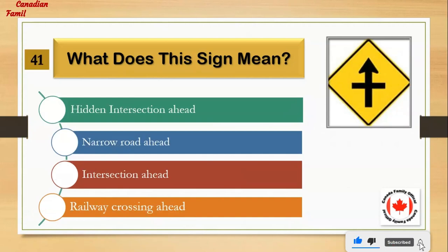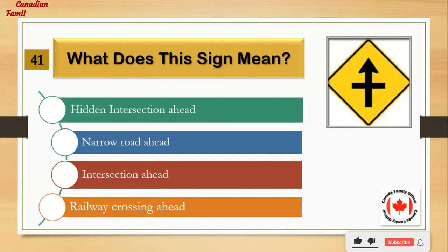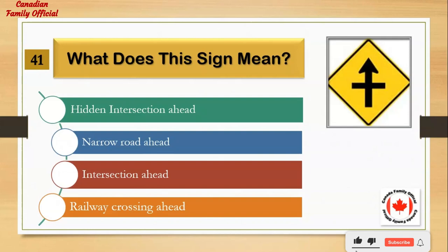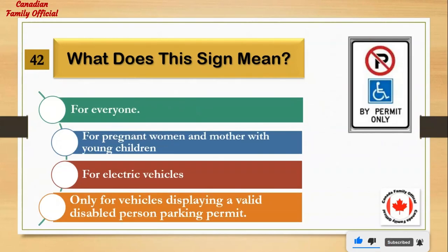What does this sign mean? Number 1: hidden intersection ahead. Number 2: narrow road ahead. Number 3: intersection ahead. Number 4: railway crossing ahead. And the answer is: intersection ahead.